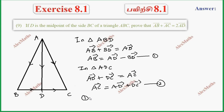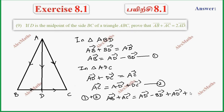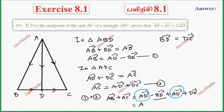Now adding first and second: AB vector plus AC vector equals AD vector minus BD vector plus AD vector plus DC vector. Now since D is the midpoint, BD vector equals DC vector. So minus BD vector and plus DC vector cancel. We have AD vector appearing in both terms, giving us 2AD vector.